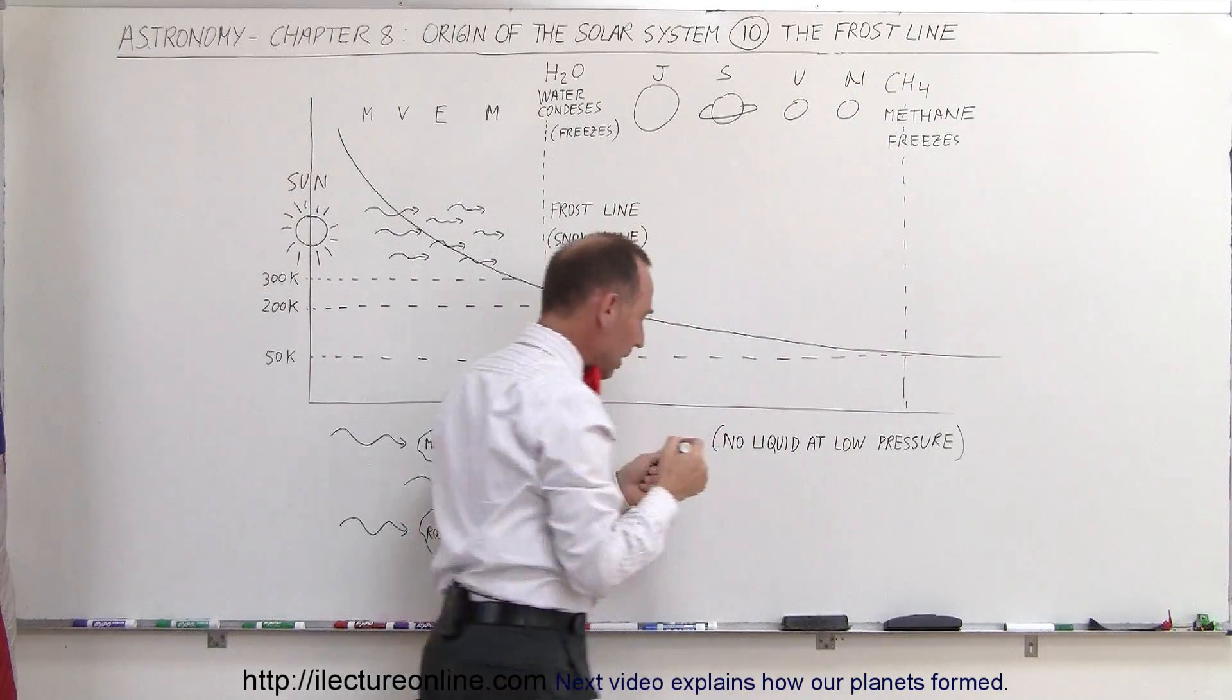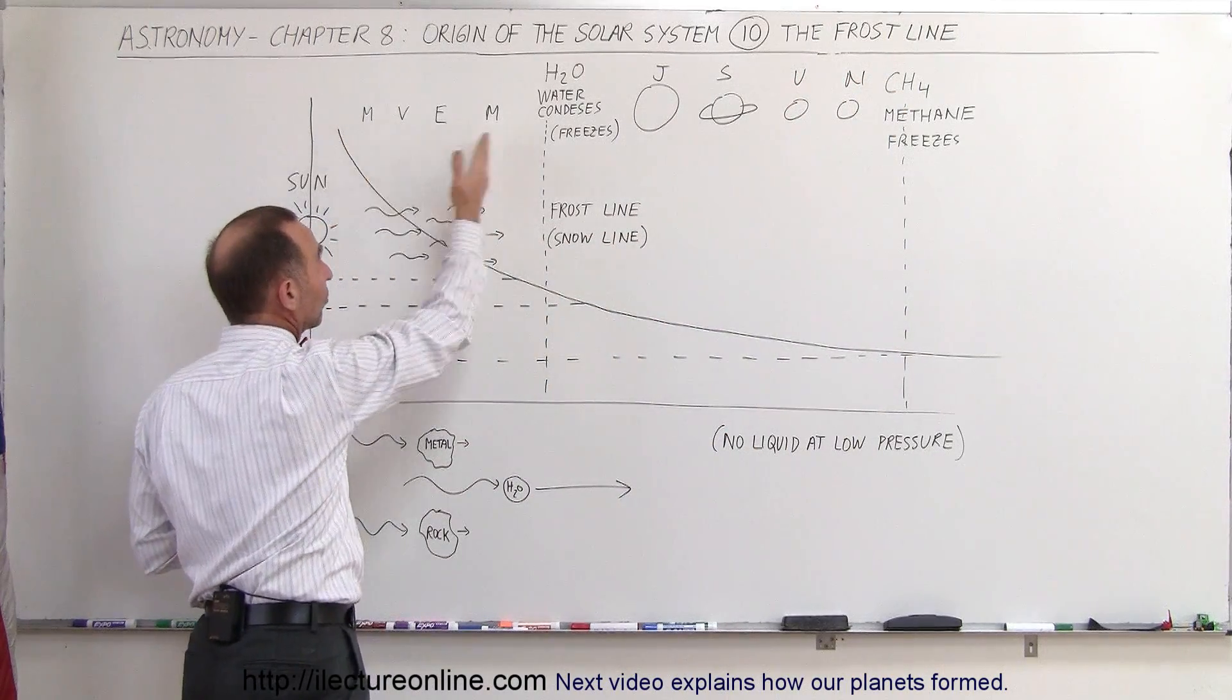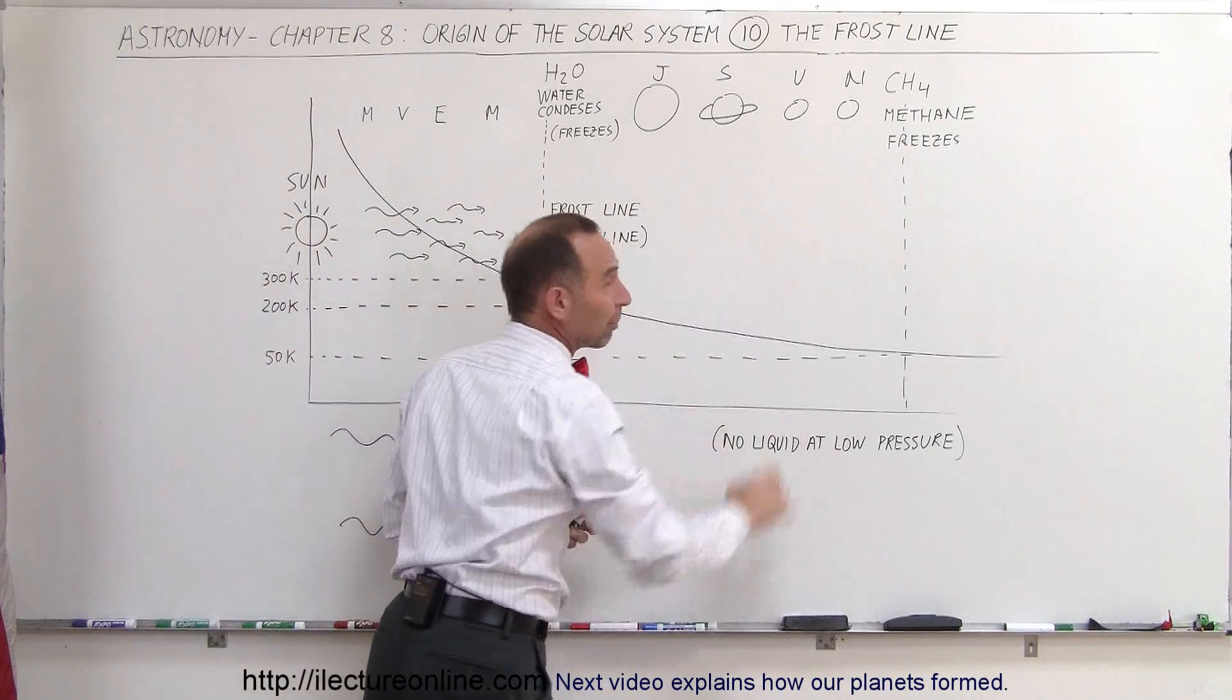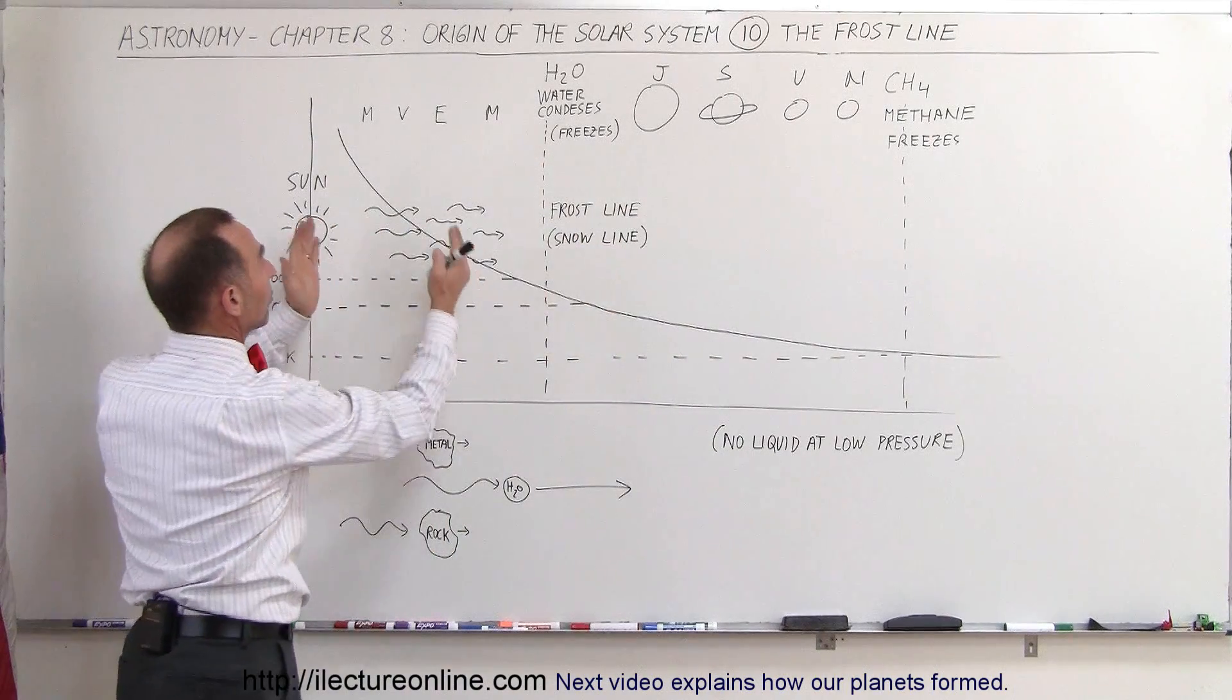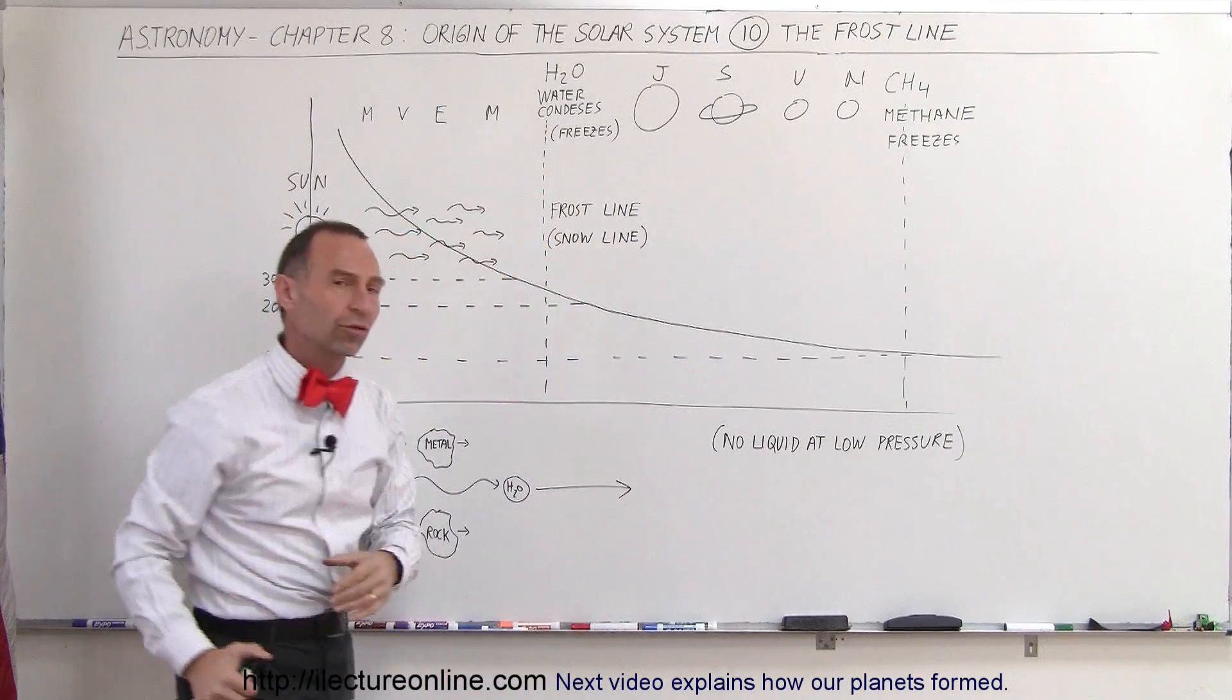How did it get to be the way it is? First of all, these are the terrestrial planets and these are the big gas planets. So why do we find terrestrial planets in the inner solar system and gas planets in the outer solar system?